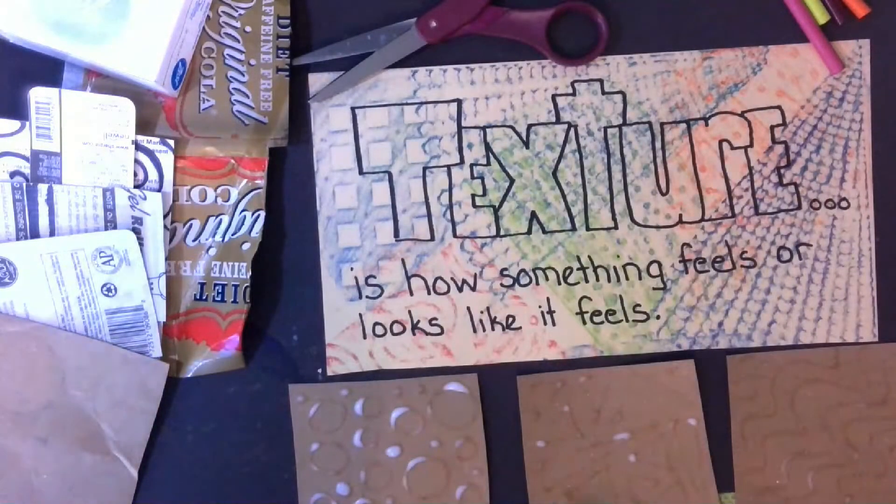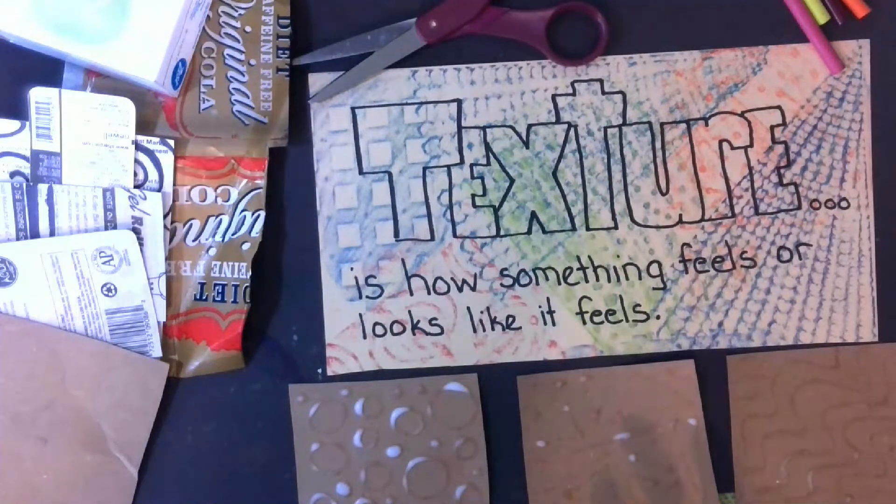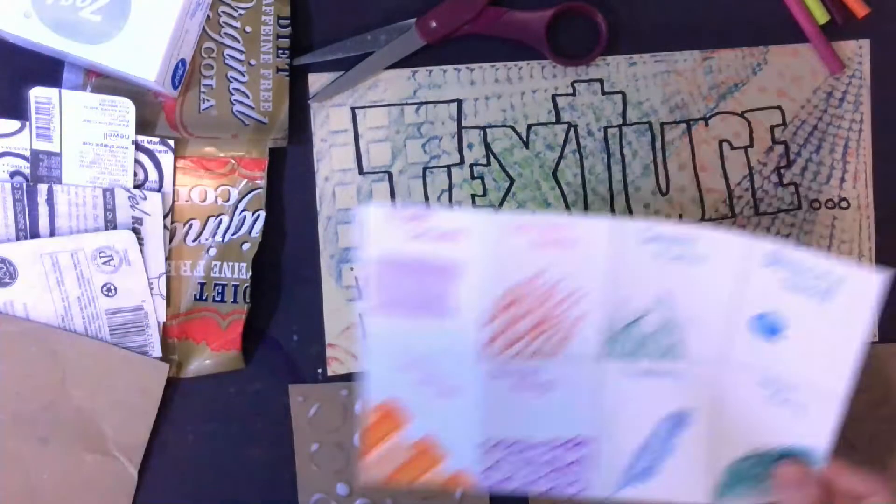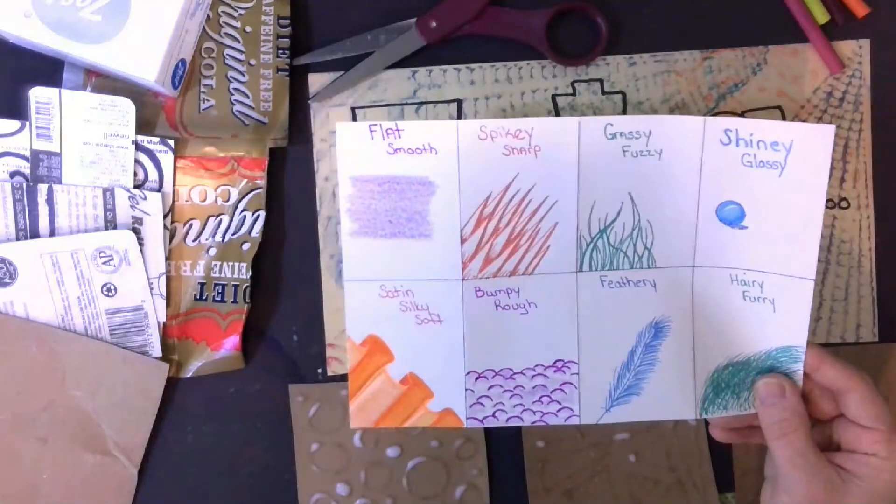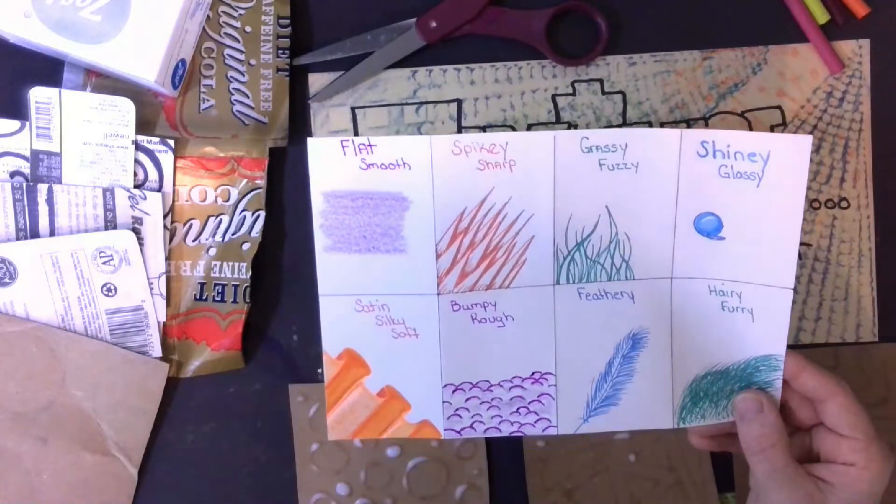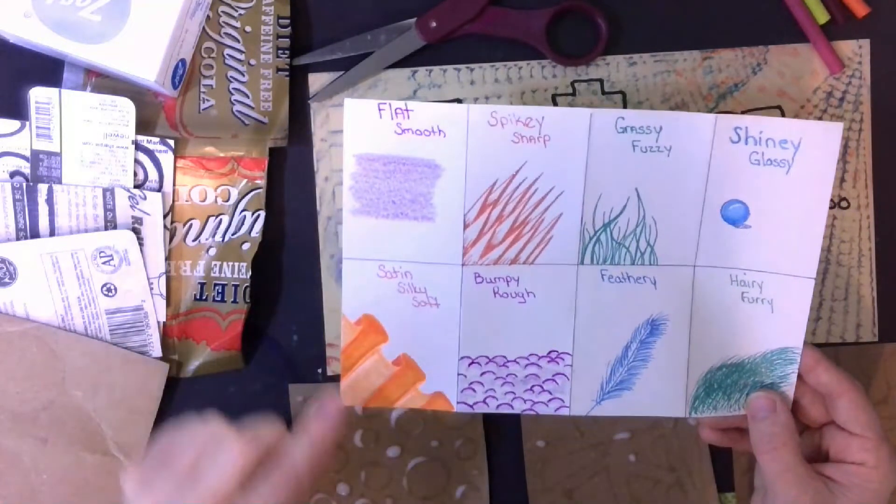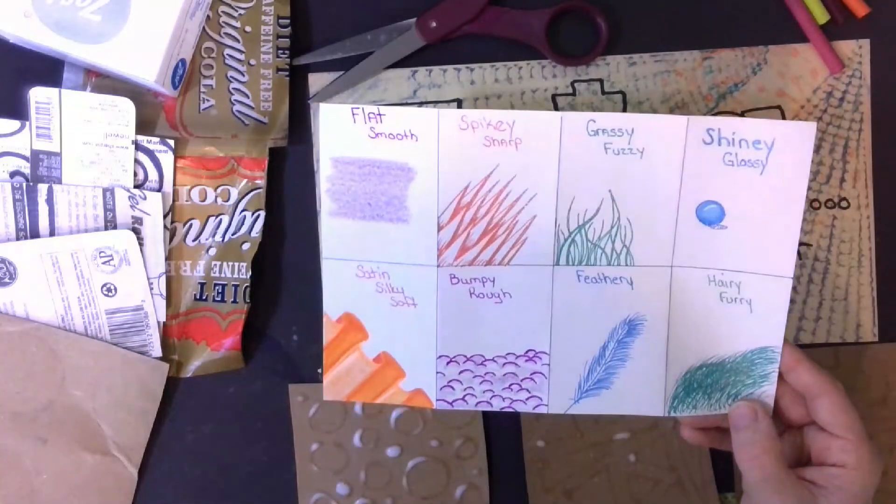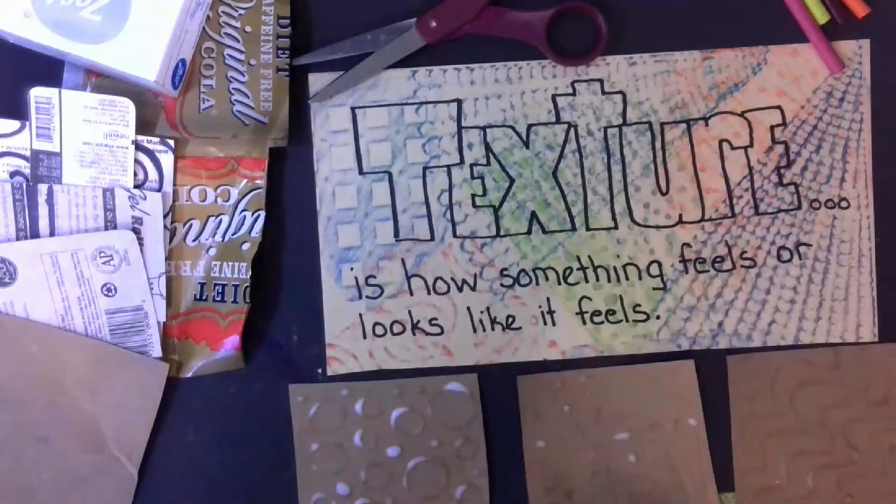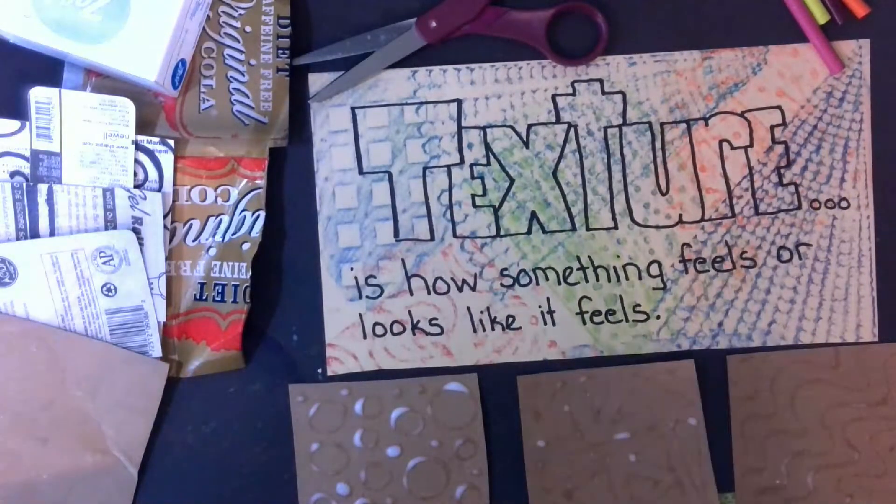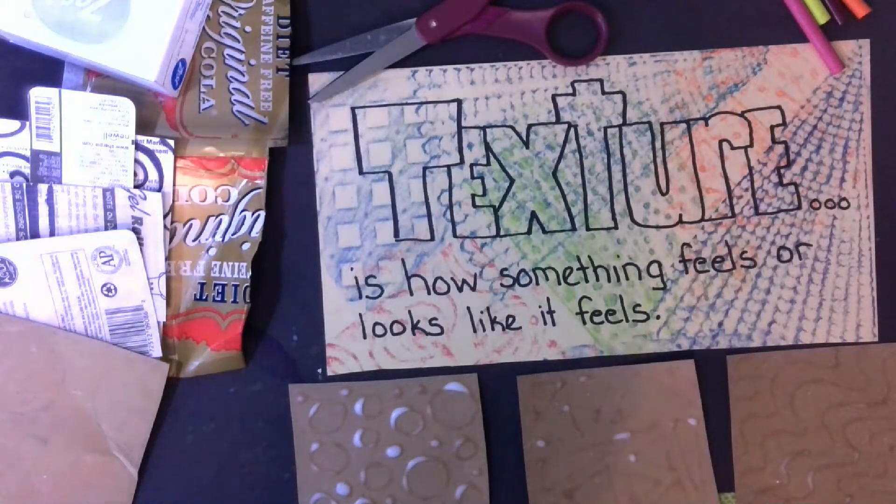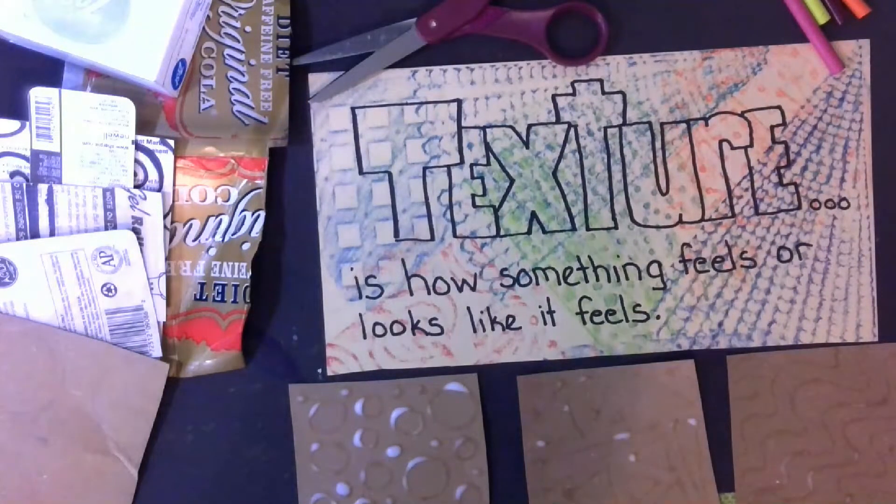In the art world, we create a drawing that looks like it would feel flat or spiky, grassy, fuzzy, shiny, satiny, bumpy, feathery, or even furry. So, texture is what brings a lot of our stuff to life. As well as just the whole experience of it.